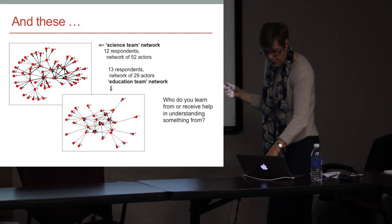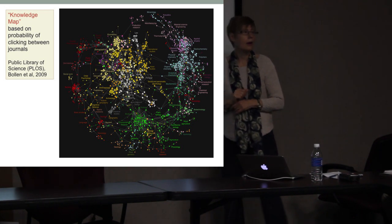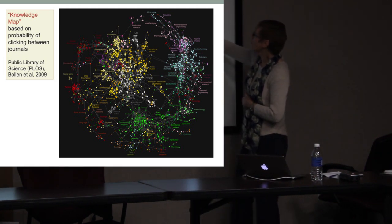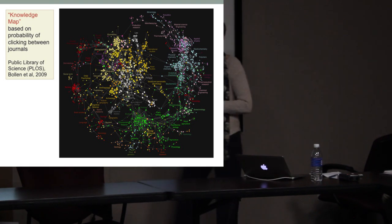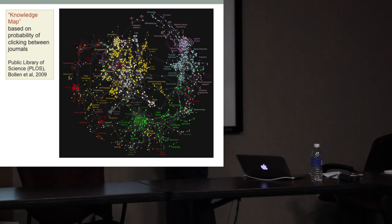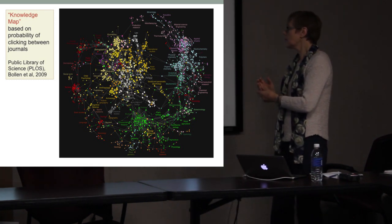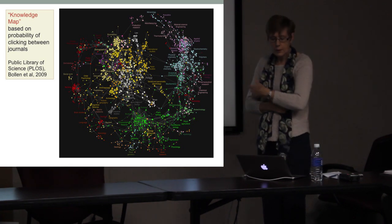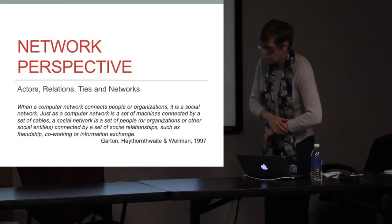Here's one of my favorite pictures: the Public Library of Science, showing the probability of clicking between journals. What we have is a whole mapping of disciplinary interconnections. Over here we've got chemistry, moving to the biologies, to environmental sciences, up into music, up to the social sciences and education. You can see where the strong connections are and where there's very little connection between this cluster and the social sciences. The point is that there are other things you can connect — it doesn't have to be just people.